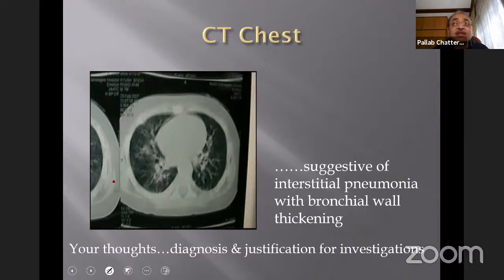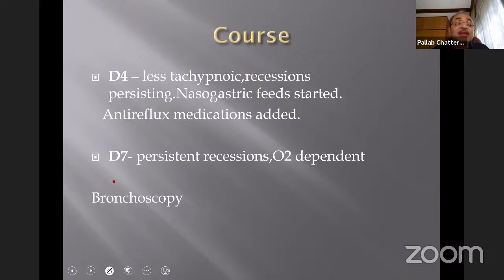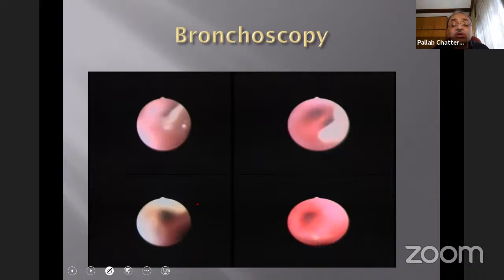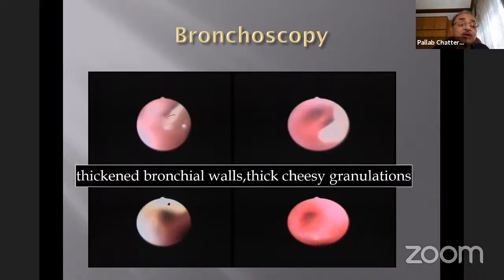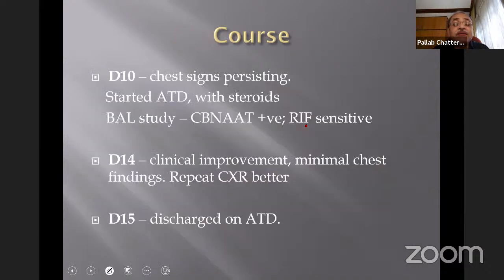A bronchoscopy was done and revealed thick cheesy material in the bronchus with thickened bronchial walls — we were thinking of tuberculosis. Bronchial lavage was sent, which came back NAT positive and rifampicin sensitive. The child was started on anti-tubercular drugs and discharged on that regimen. This brings us to pediatric tuberculosis: suspect it when there is persistent fever for more than two weeks without a known cause, unremitting cough, and weight loss of 5% or no weight gain for the past three months.